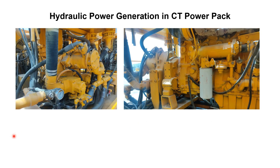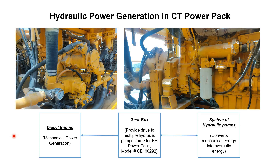Now let's discuss how hydraulic power is generated in a coil tubing power pack. In each and every power pack there is a diesel engine, a gearbox, and a system of hydraulic pumps. The diesel engine produces mechanical energy by converting the chemical energy of the diesel — specifically, the rotational energy of the flywheel. This rotational energy is then transferred to the hydraulic pumps.